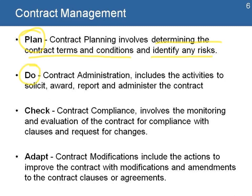The next step, contract administration, includes activities to solicit, award, report, and administer the contract — either the contract with the donor or contracts with third parties. The check step involves contract compliance: monitoring and evaluating the contract for compliance with clauses and requests for changes. And the adapt step covers contract modifications that include actions to improve the contract, with modifications and amendments to the contract clauses and agreements.